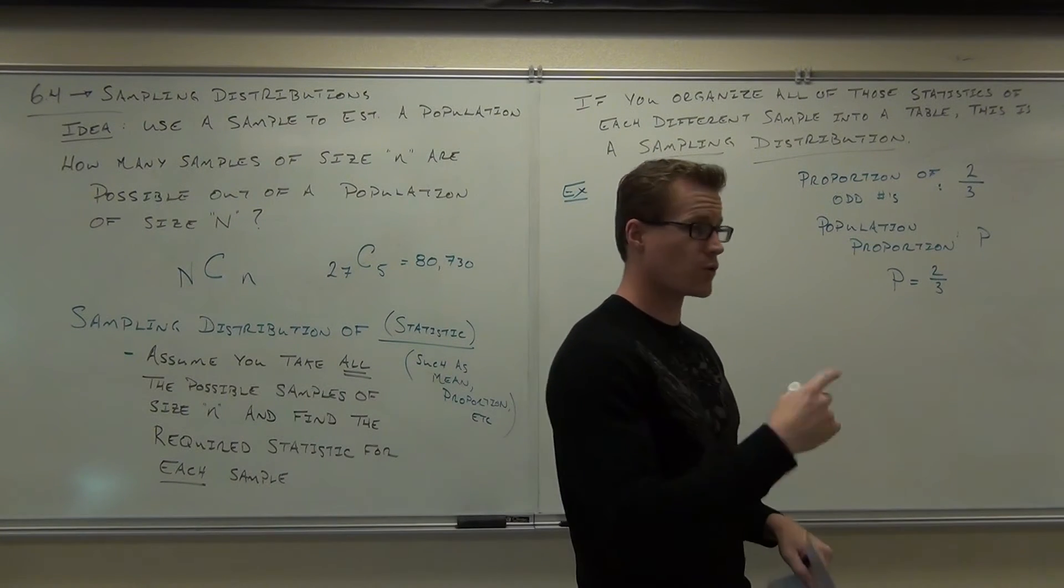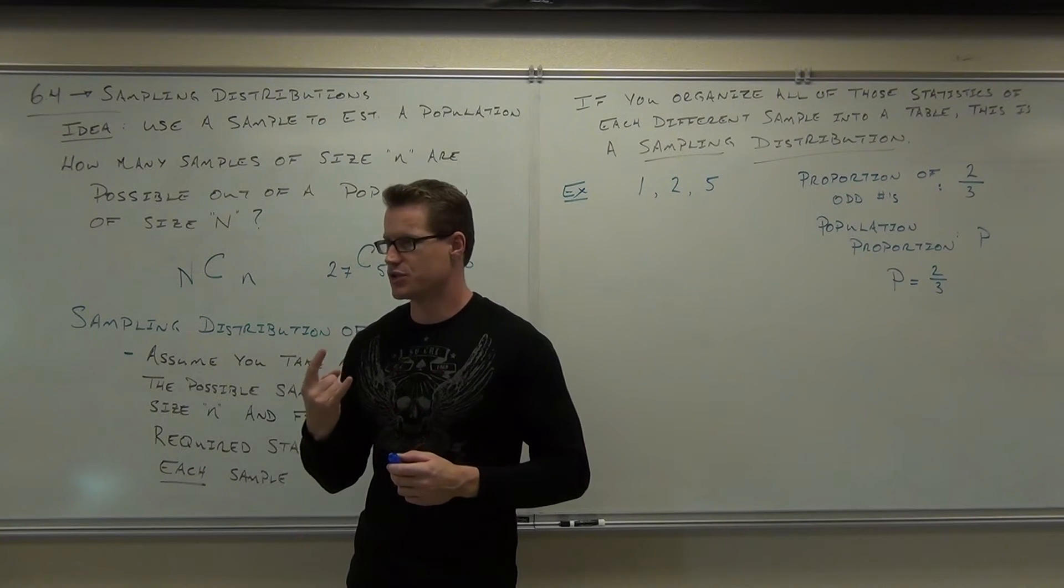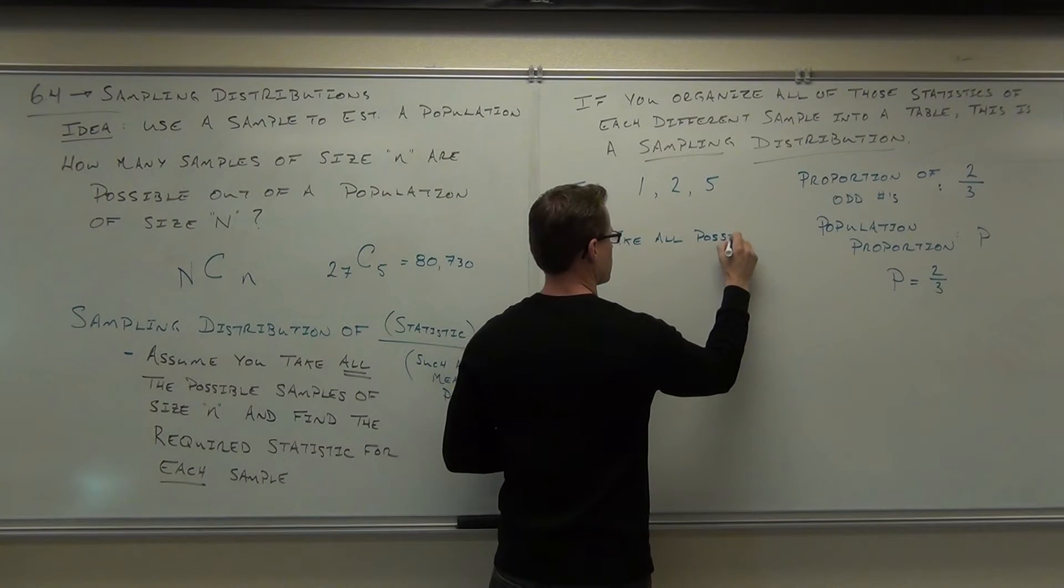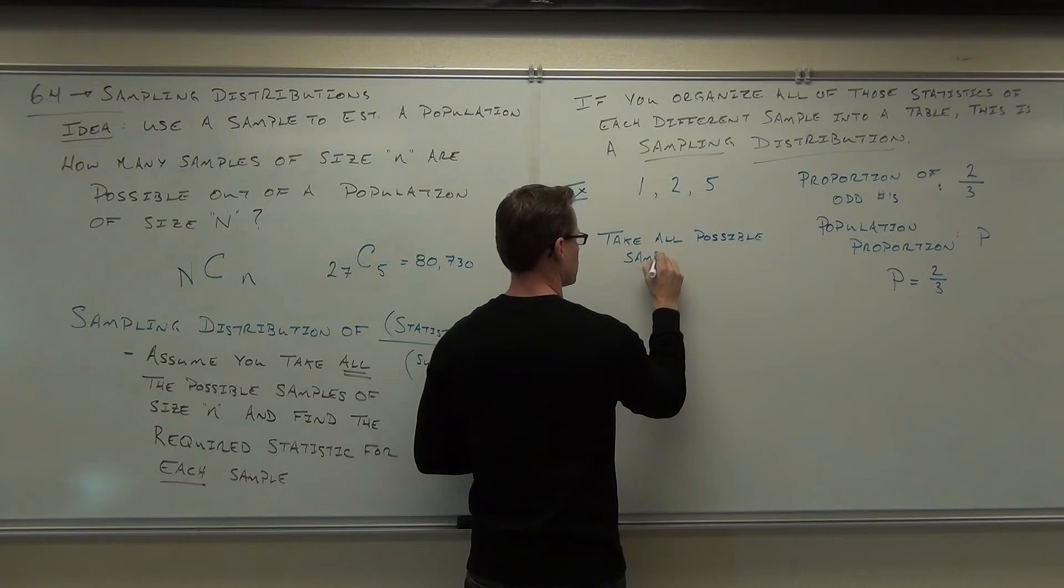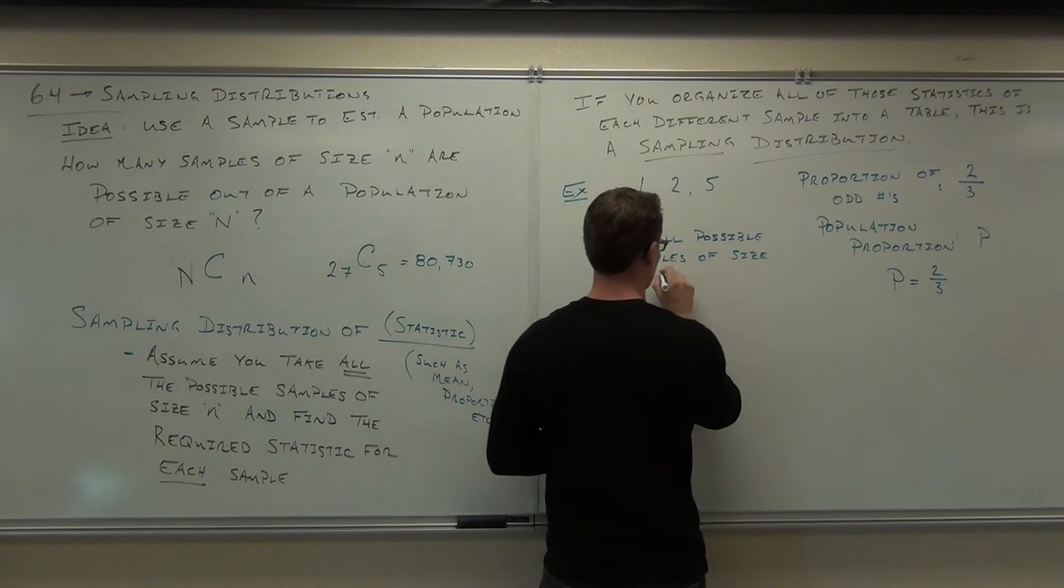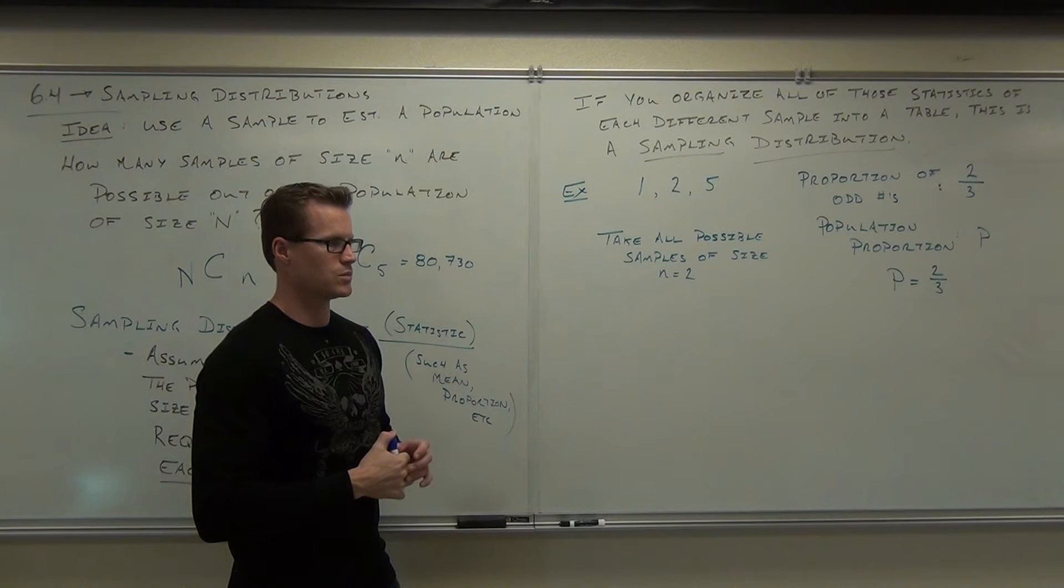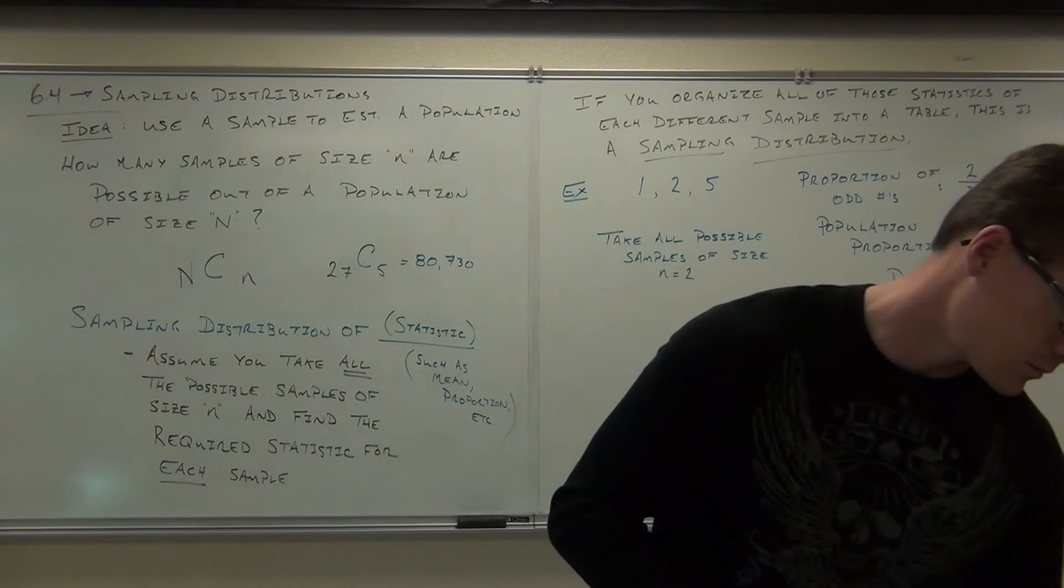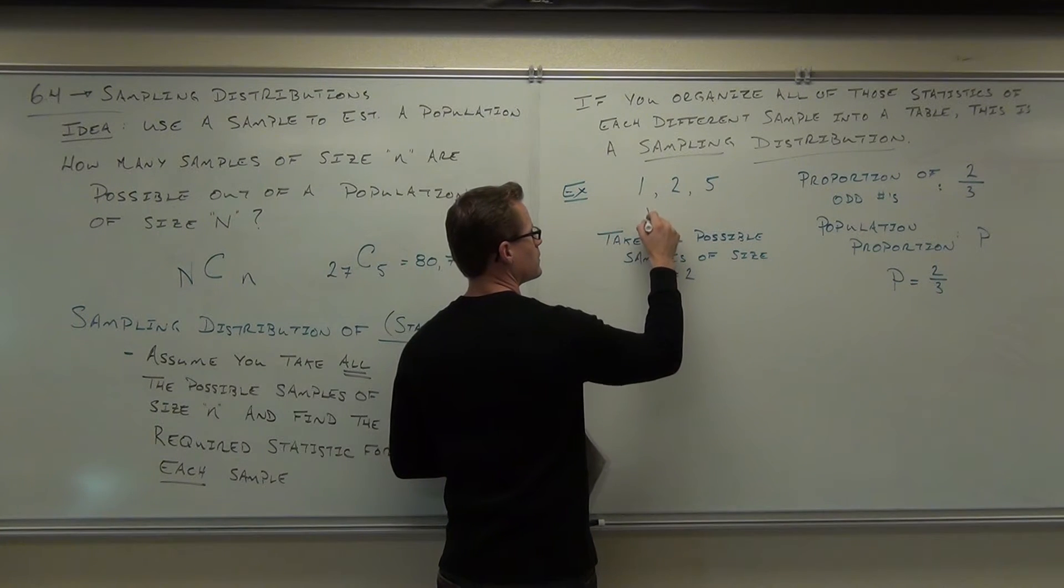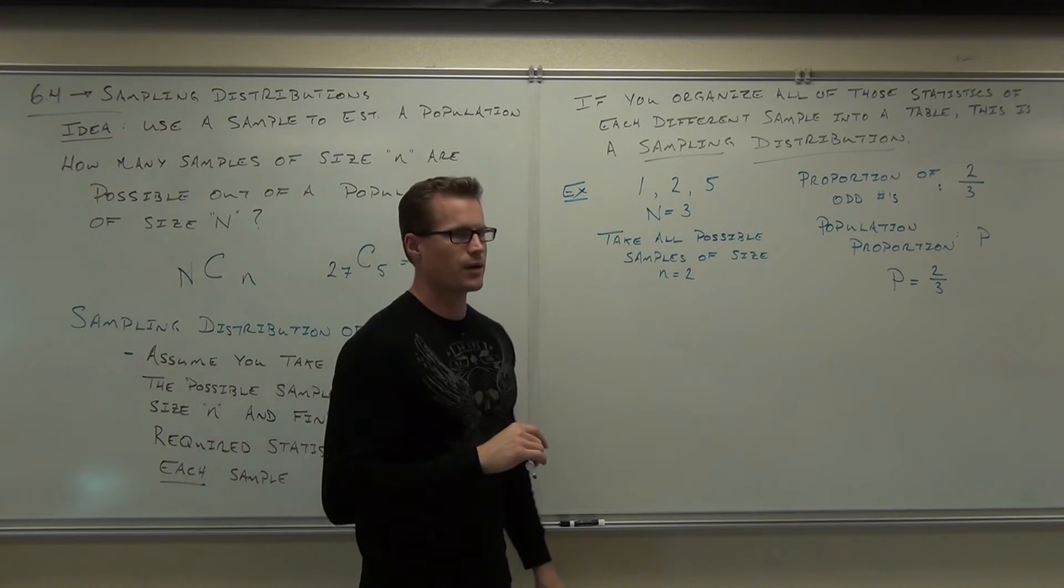Now what I'm going to do is I'm going to create a sampling distribution with you. What we're going to do is we're going to take all the possible samples of size two. So big N equals three, little n equals two.